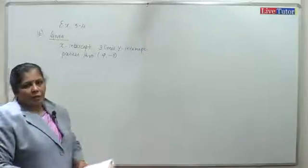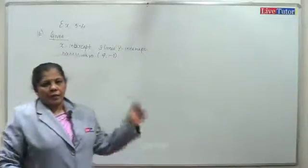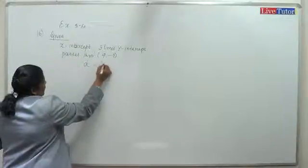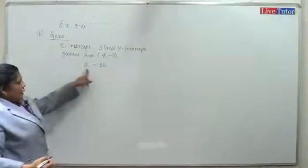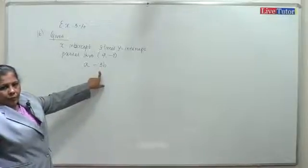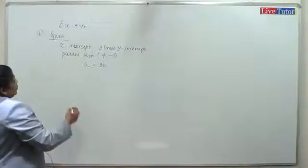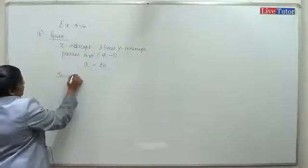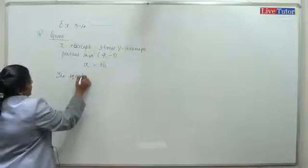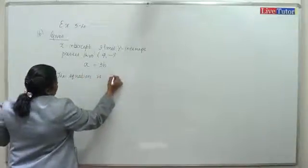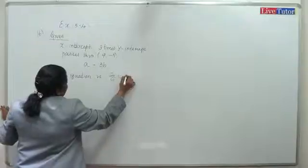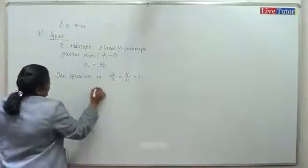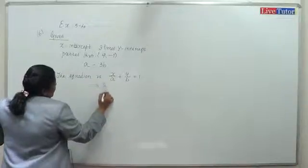Therefore a is equal to 3b. Using the intercept form, x by a plus y by b is equal to 1. Since a equals 3b, we substitute to get x by 3b plus y by b equals 1.